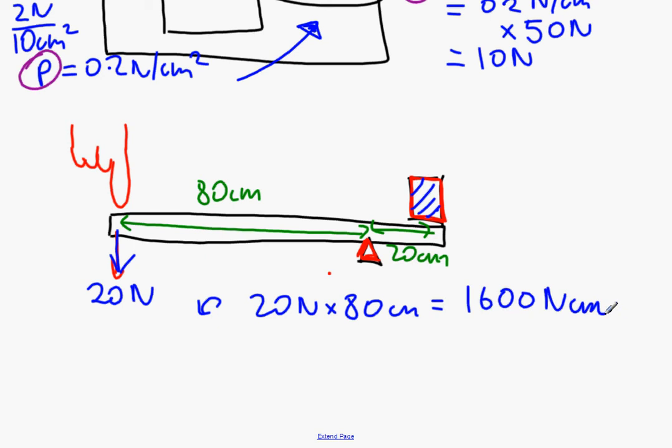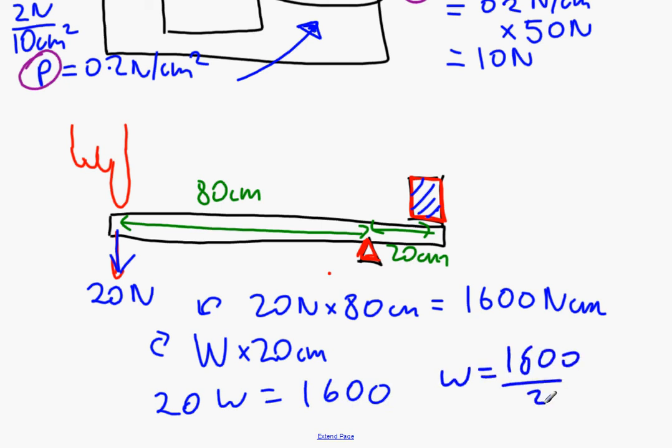The clockwise moment, let's call it W, the weight of this heavy thing, is going to be W times 20 centimeters. So therefore if these two moments are equal, the clockwise and the anti-clockwise, because this thing is in equilibrium, it's balanced, then 20W equals 1600.